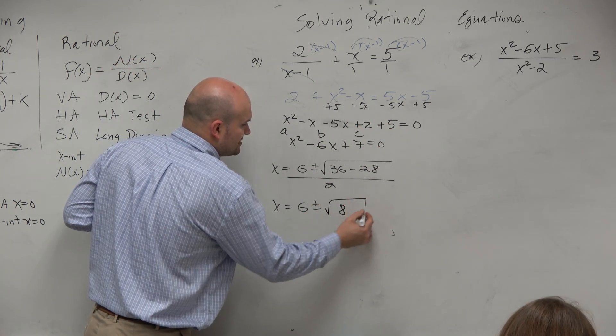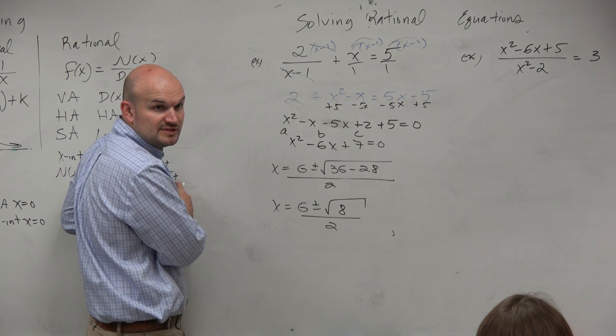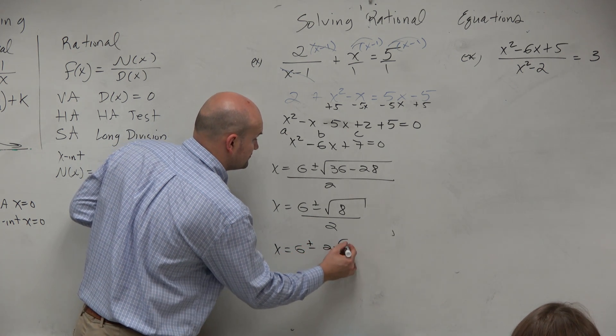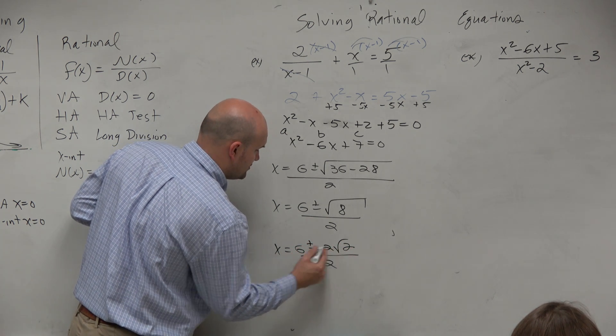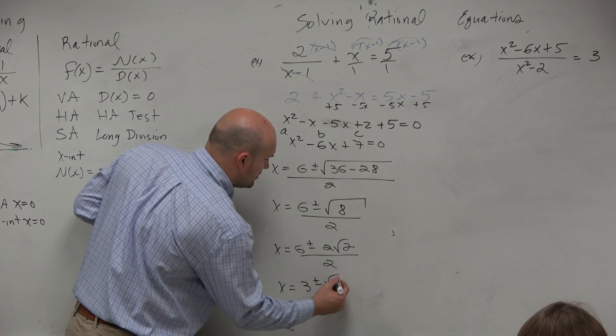This is going to be the square root of 8 over 2. Square root of 8, anybody know? Or it can be simplified. 2 square root of 2 over 2. And therefore, x equals 3 plus or minus the square root of 2.